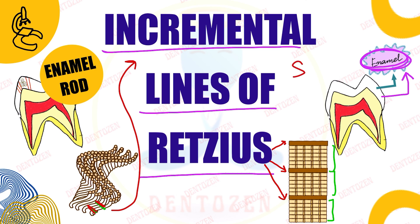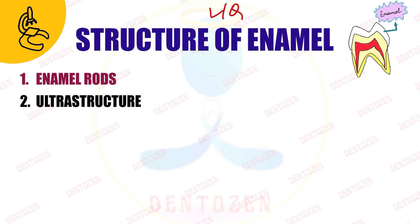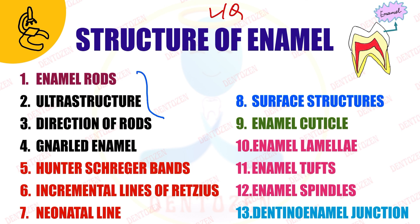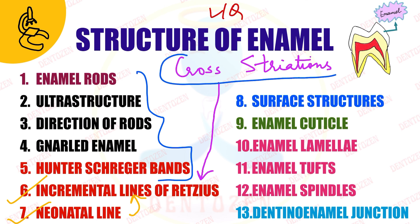Incremental lines of Retzius can come as a short note question or as part of a long question on the structure of enamel. We have already covered the first five structures in previous videos. In today's video we'll discuss incremental lines of Retzius, the neonatal line, and cross striations — another type of line seen in enamel but different from incremental lines.